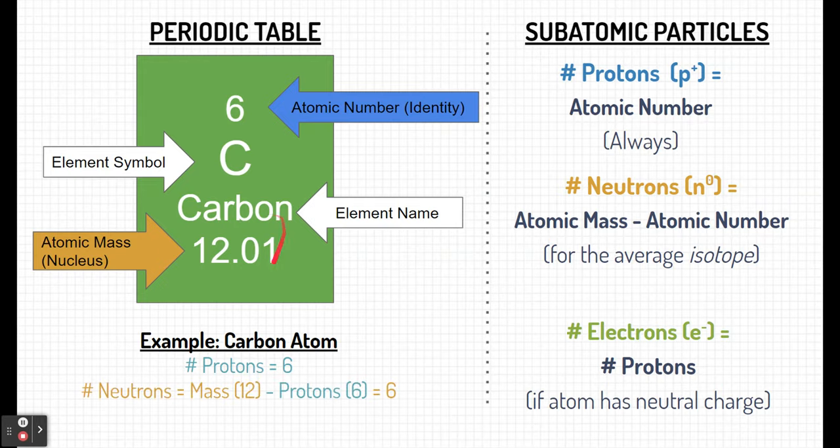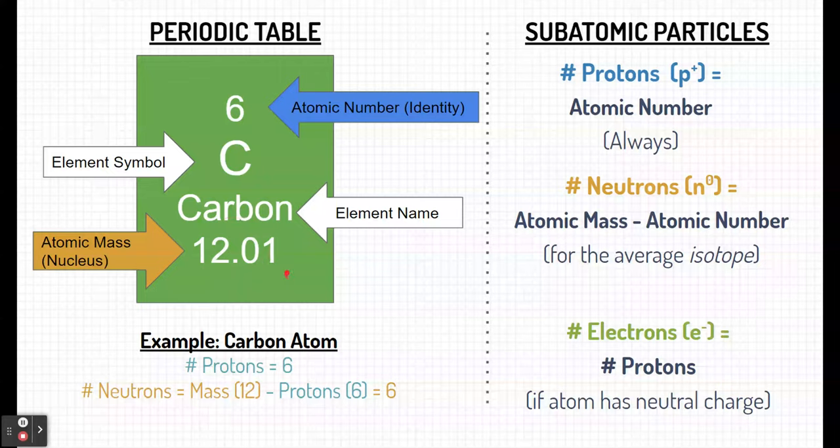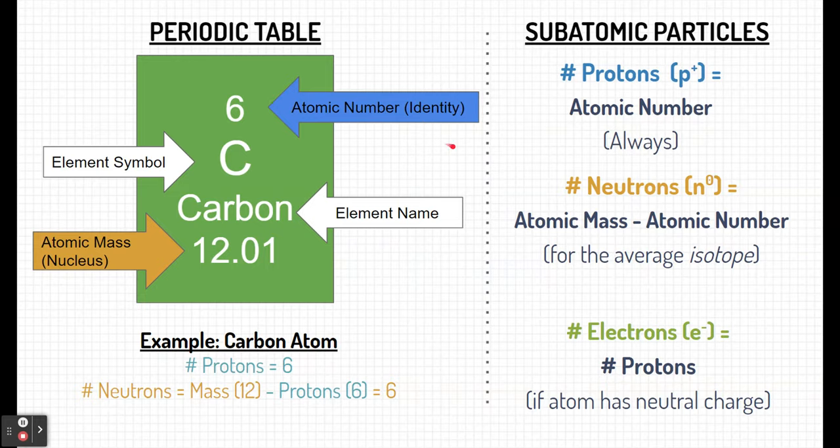How about neutrons? Well, if we take the mass and round it, which is 12, and subtract the number of protons, which is there's six protons, then we're left over with the number of neutrons in the mass, which is six. So carbon has six neutrons.